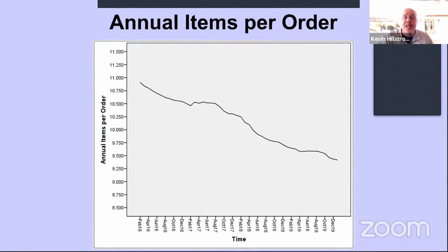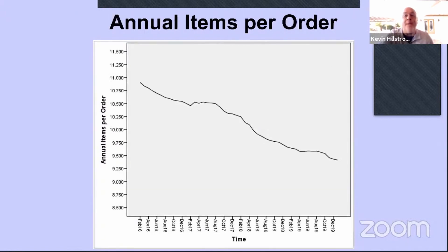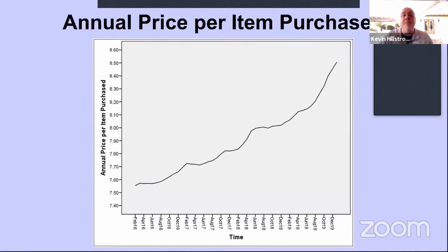This is the annual number of items per order. Four years ago, the customer was buying 11 items per order. Today, the customer is buying nine and a half items per order — that's a problem. The next graph is directly related: this is the price for every item that the customer purchased. The customer went from buying items that cost $7.55 to items that now cost $8.50.